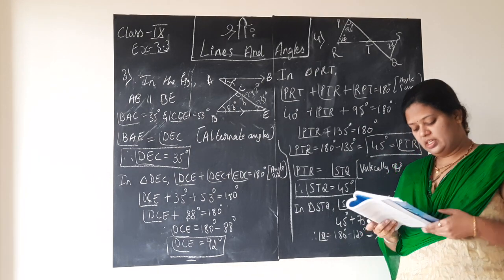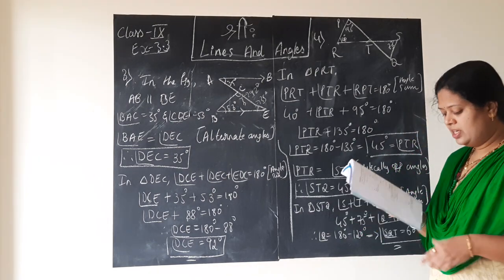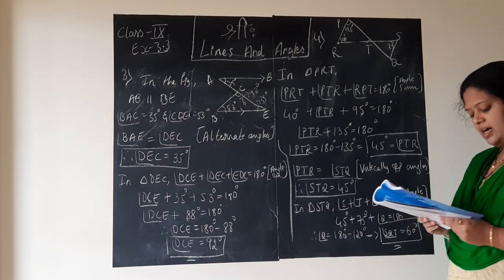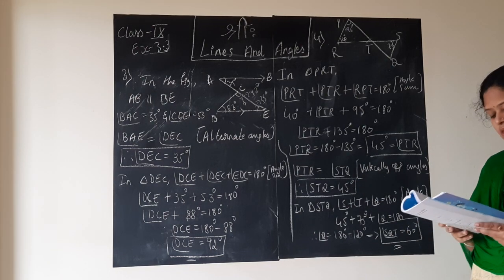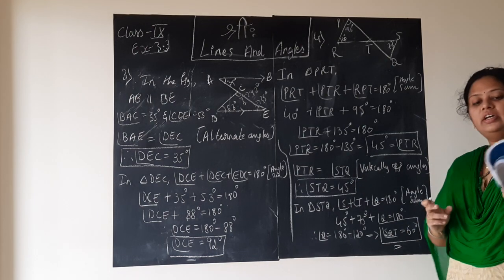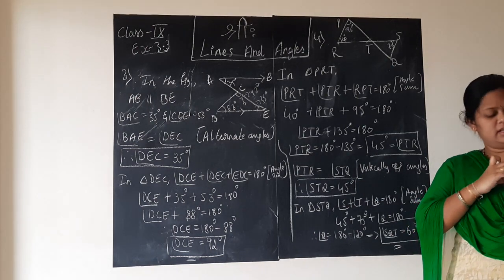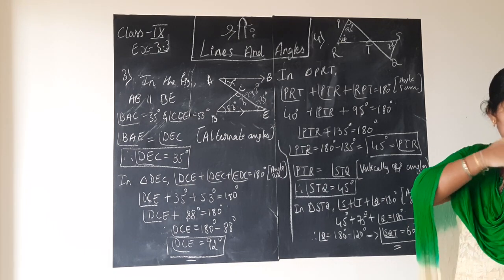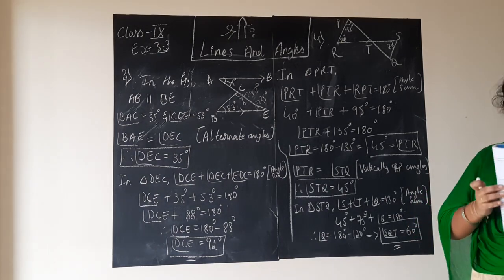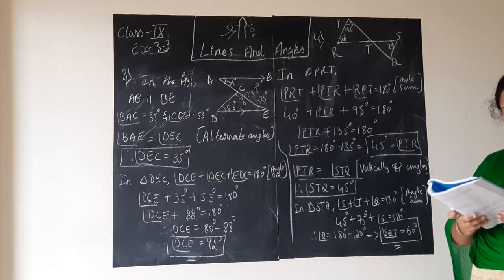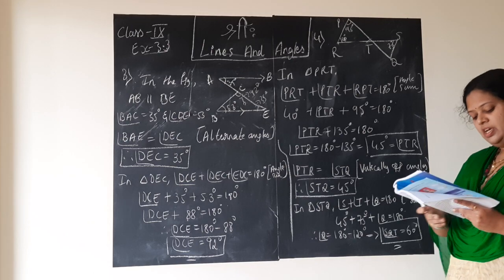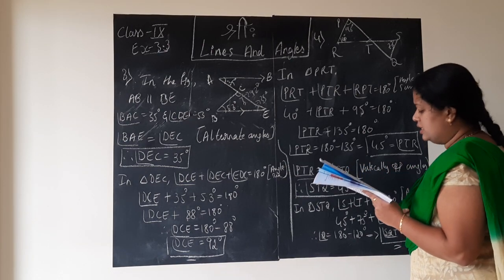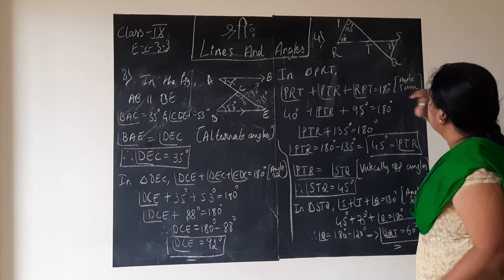Fourth question. In the figure, if lines PQ and RS intersect at point T, such that angle PRT is equal to 40 degrees and angle PTR is 95 degrees, find angle SQT. So in this small triangle, we need to find out what angle Q is.